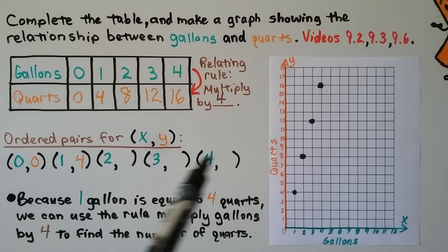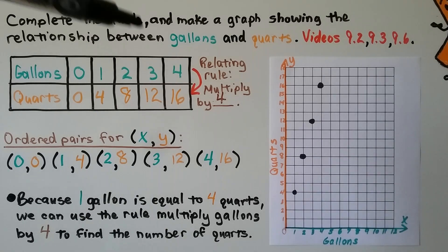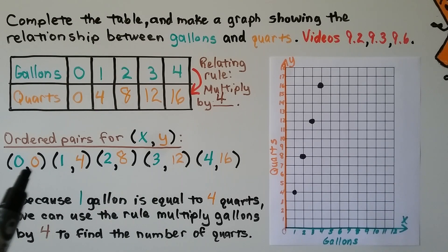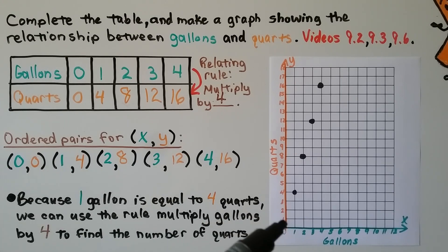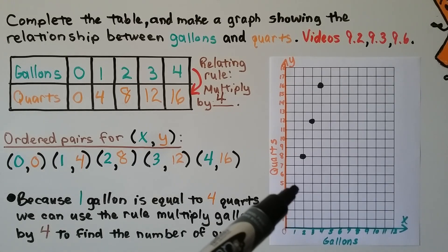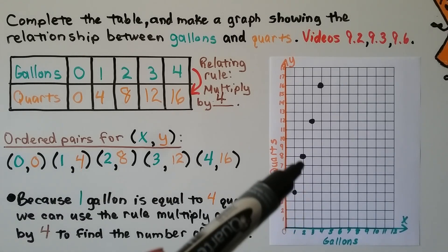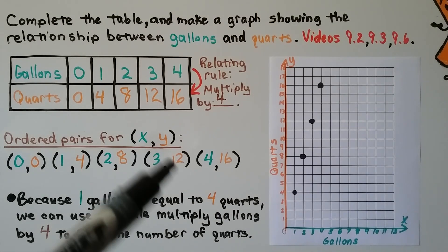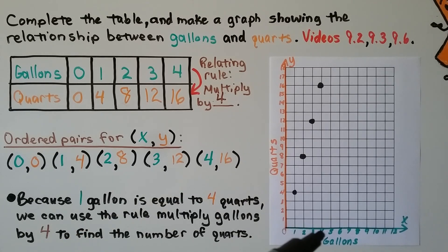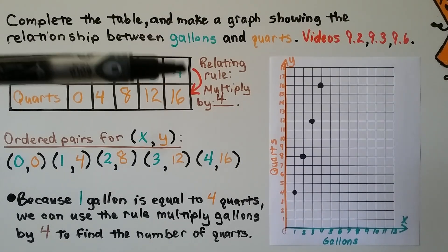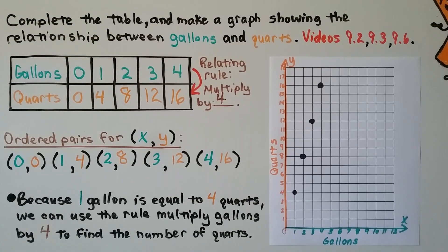We use the table to make ordered pairs: (0,0), (1,4), (2,8), (3,12), (4,16). We plot each point on the graph — x is gallons, y is quarts. Since the relating rule is multiplication, the points form a straight line with consistent steepness going upward.